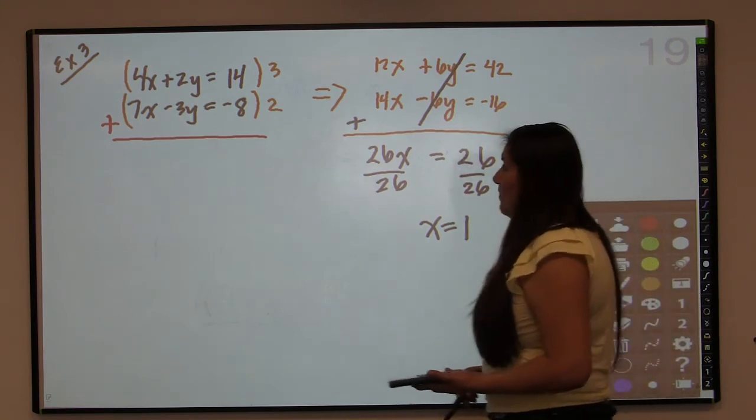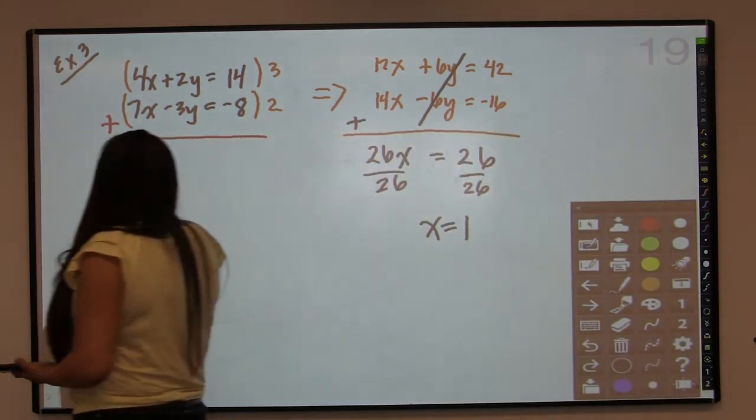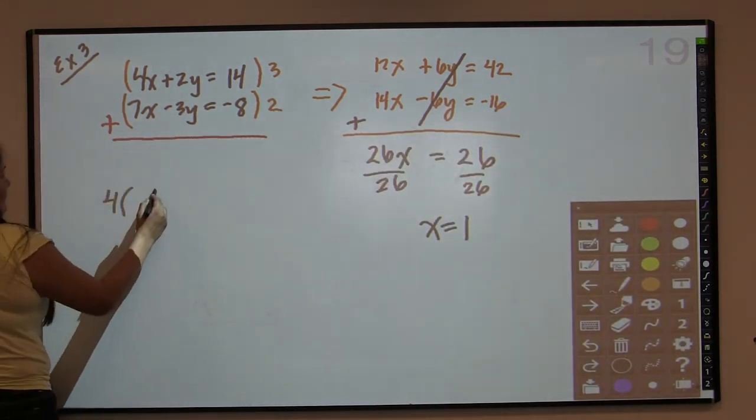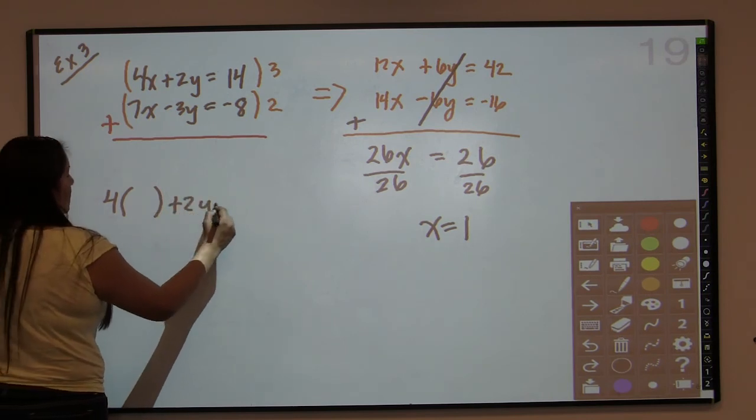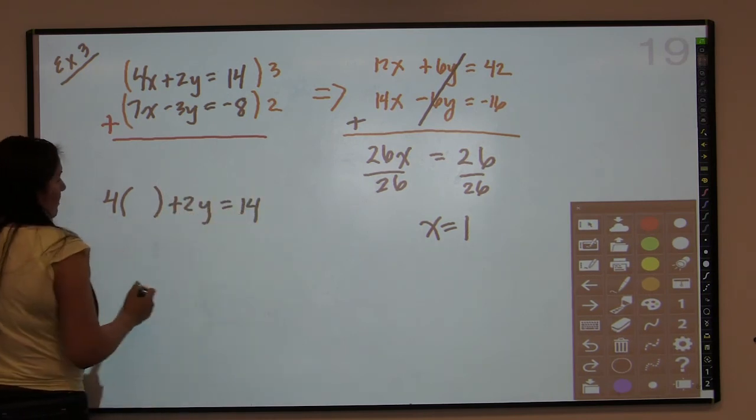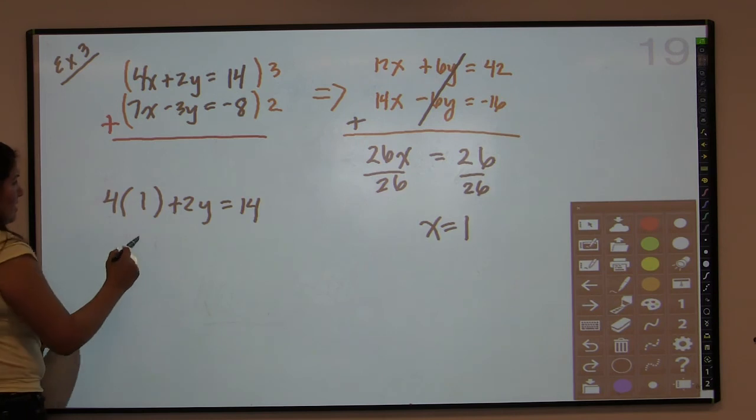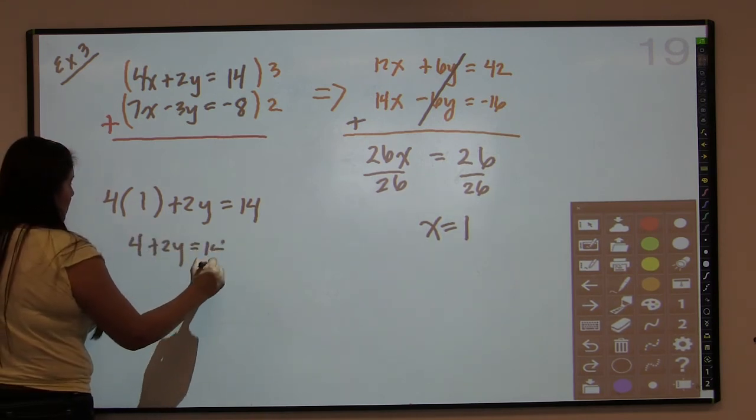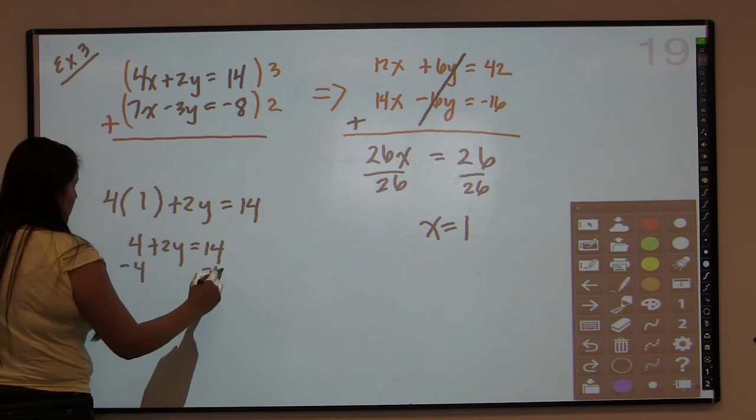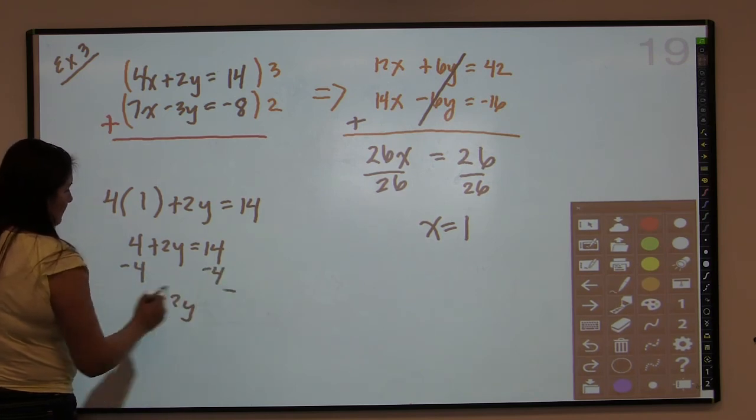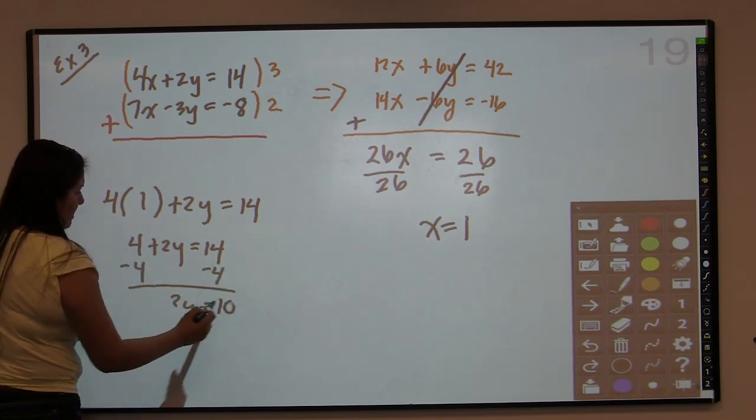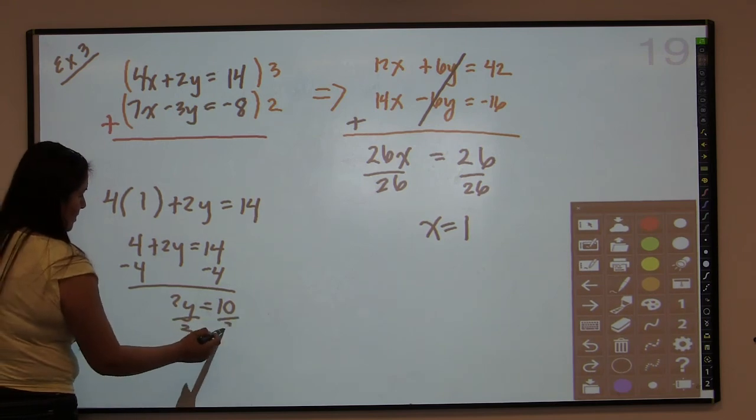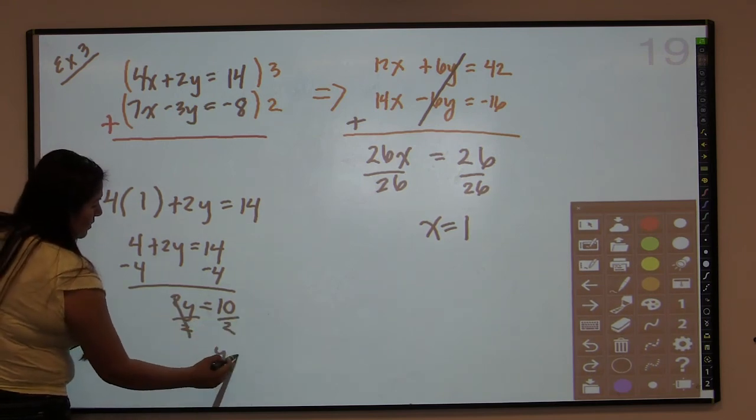Now that x equals 1, I go back to the original equation. And I say 4 times x plus 2y equals 14. I replace the x with a 1. So 4 plus 2y equals 14. Subtract 4 from both sides. 2y equals 10. Divide by 2, and y equals 5.